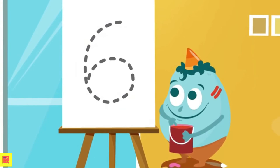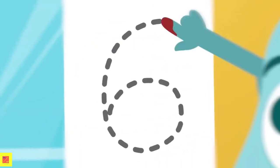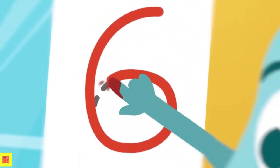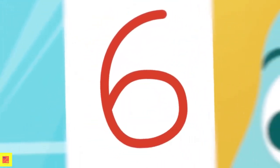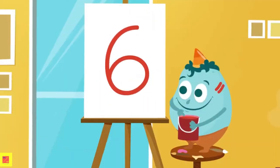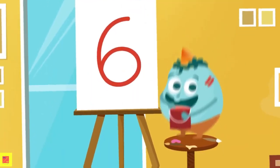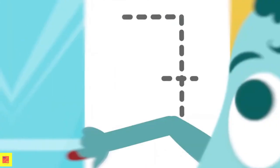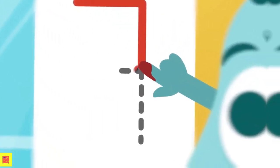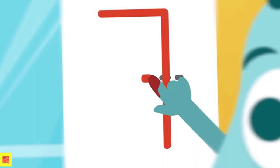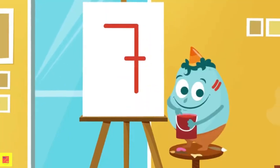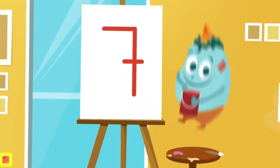Let's see if you know this one. We start here, then go downward, and we finish it by making a little circle. Which one's this? Number 6. Very good. The next number has straight lines. One here, one that goes down here, and lastly the small one that goes here. Do you know what this one is? Number 7. Yes.